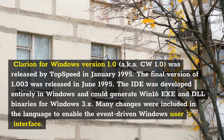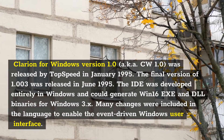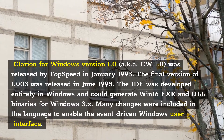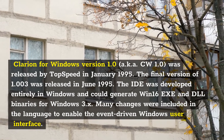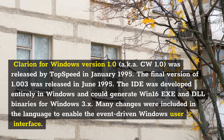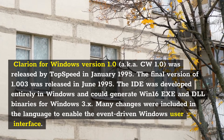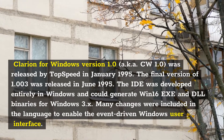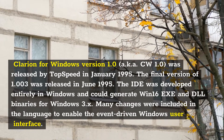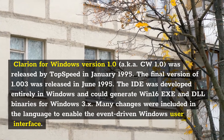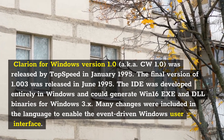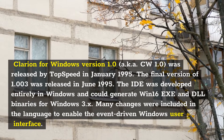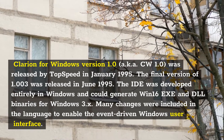Clarion for Windows version 1.0, also known as CW 1.0, was released by Top Speed in January 1995. The final version, 1.003, was released in June 1995. The IDE was developed entirely in Windows and could generate Win16 EXE and DLL binaries for Windows 3.x. Many changes were included in the language to enable the event-driven Windows user interface.